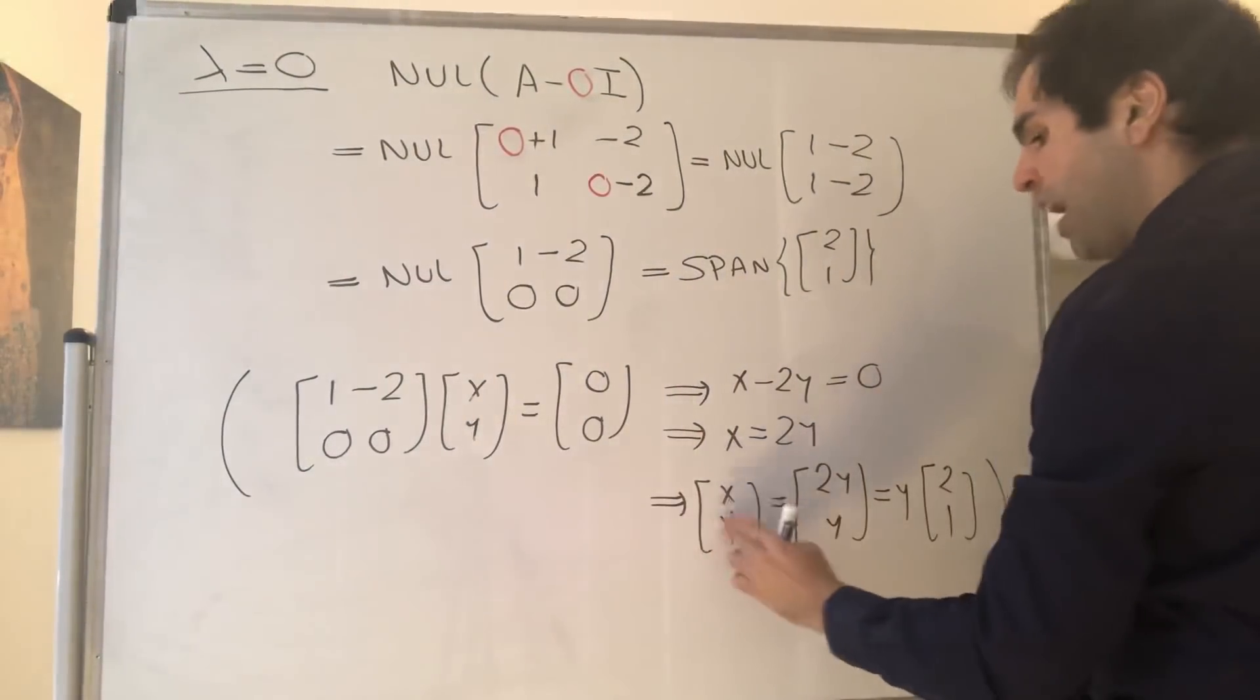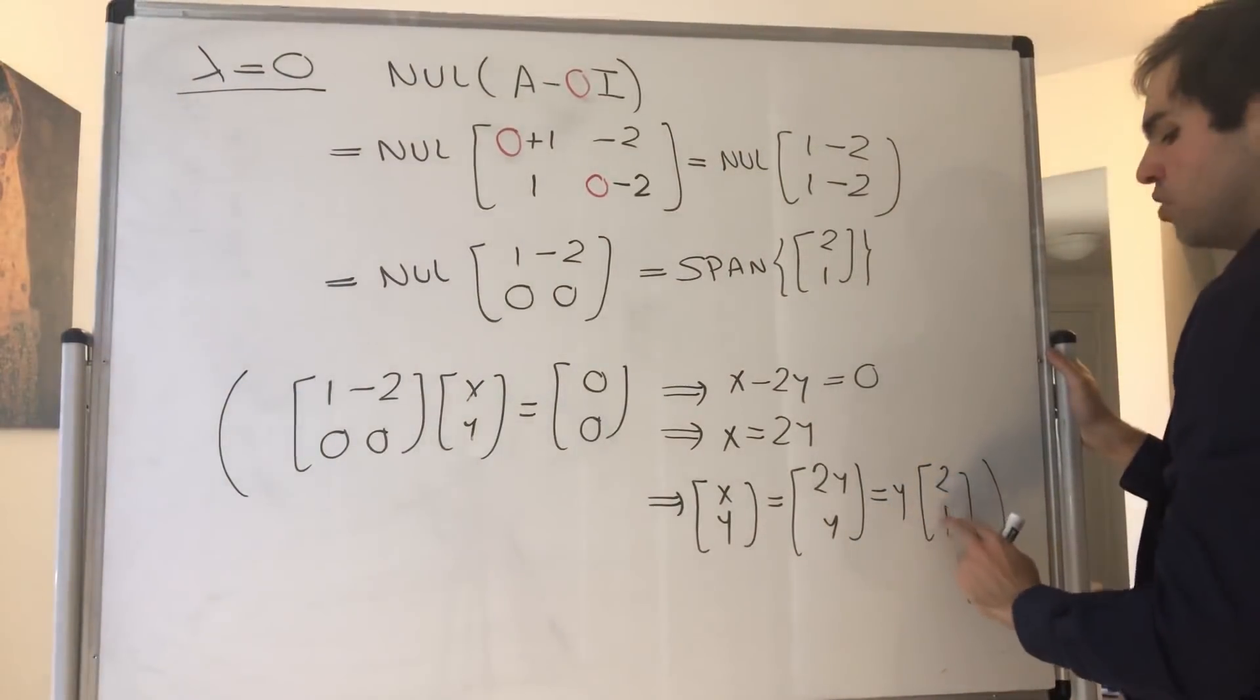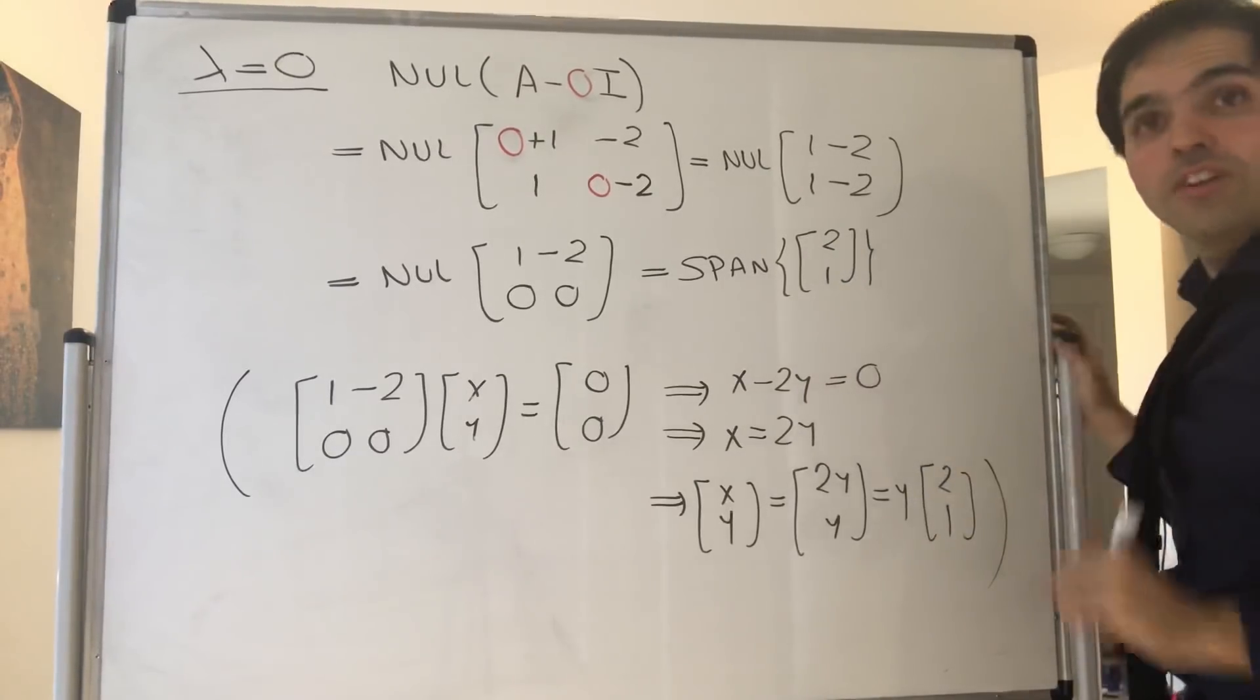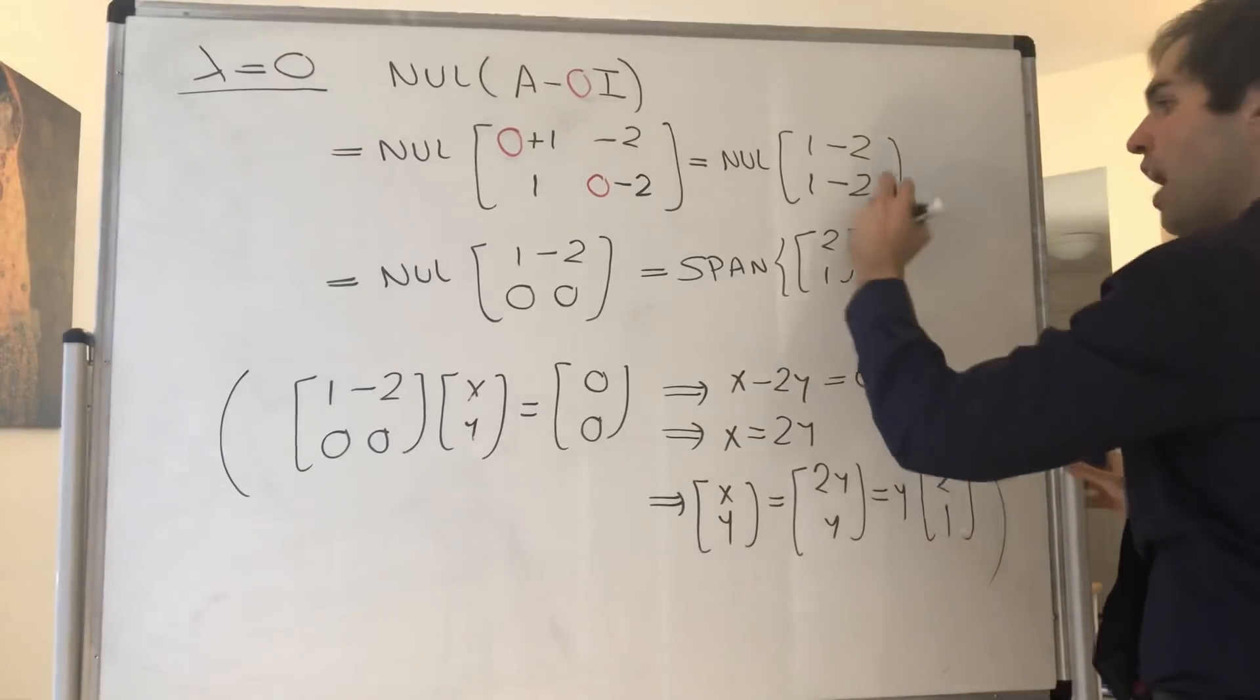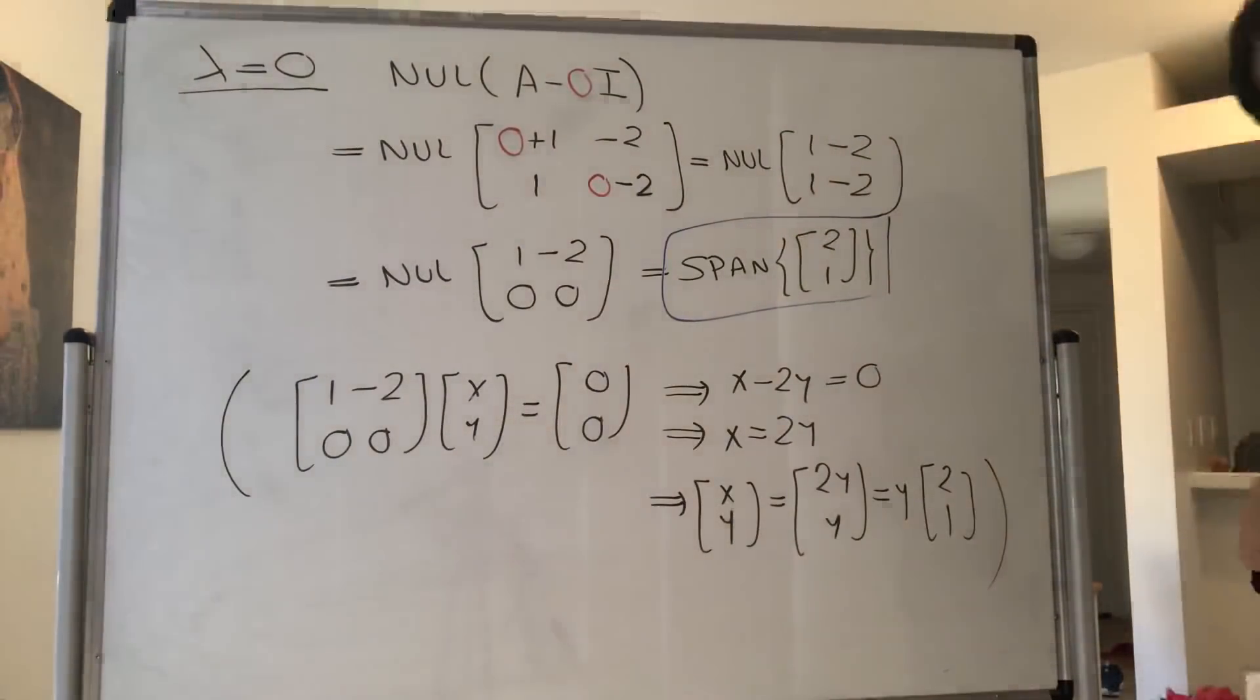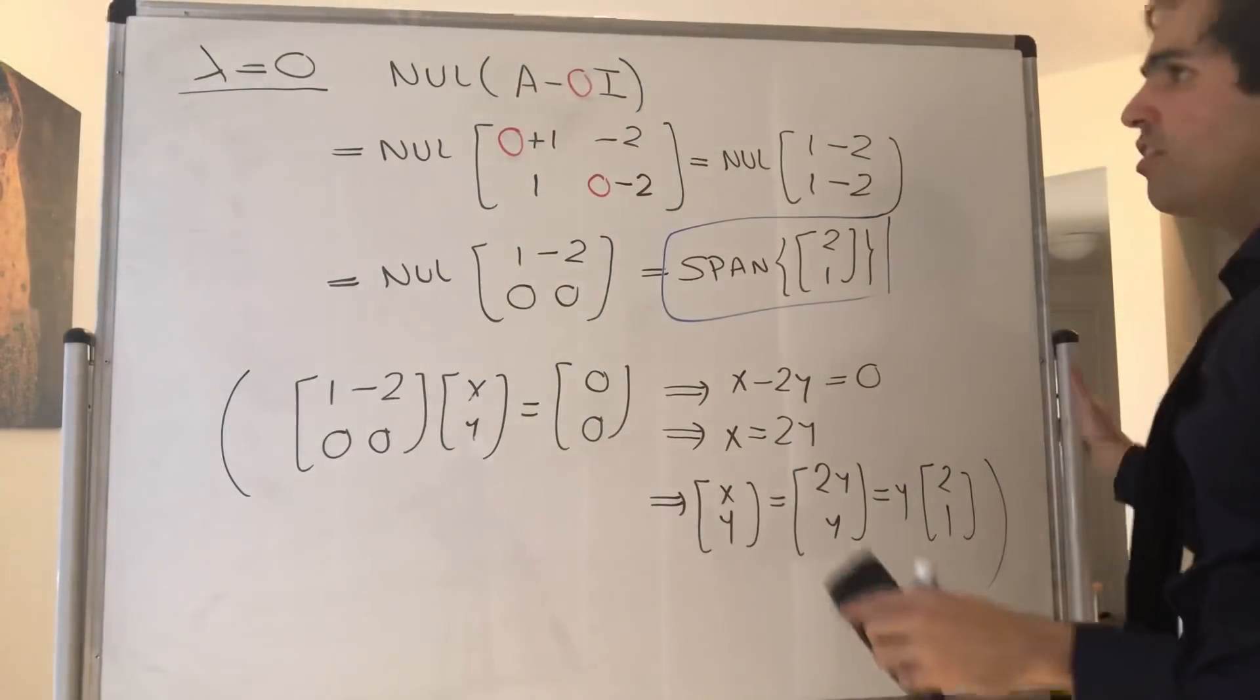And therefore, [x, y] is [2y, y], and that's y times [2, 1]. And that's just the span of [2, 1] because it's all the multiples of [2, 1]. So that is one eigenvector - an eigenvector corresponding to 0 is [2, 1]. And now, if you want, let's just do quickly the other eigenvalue.